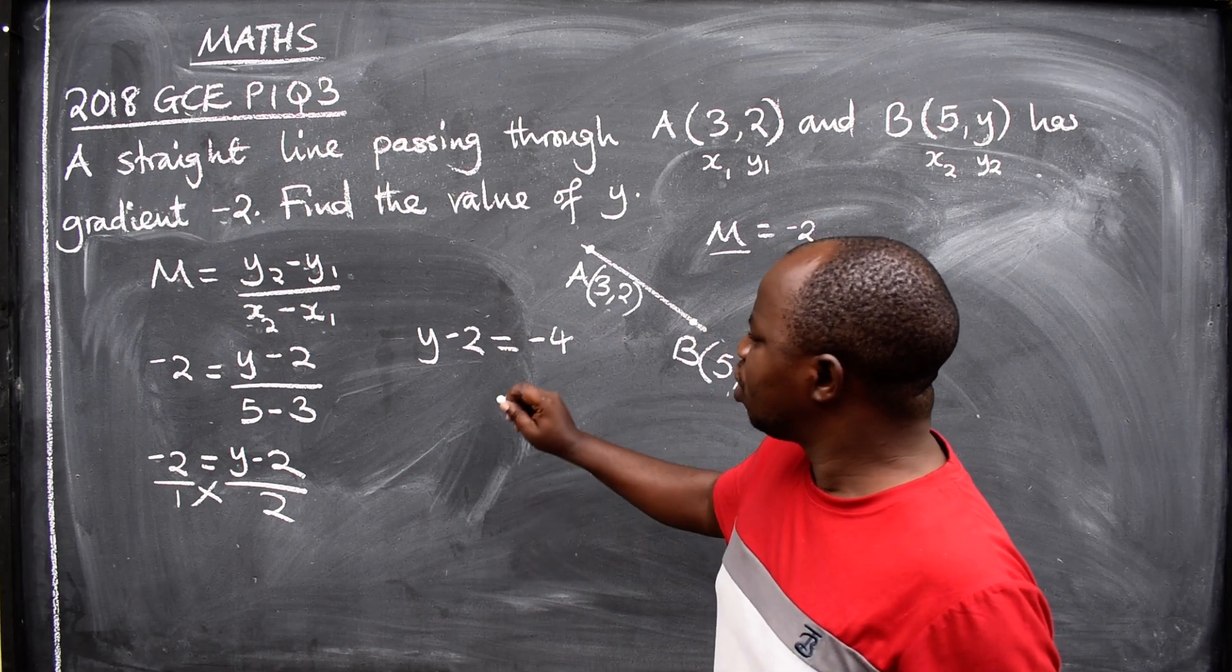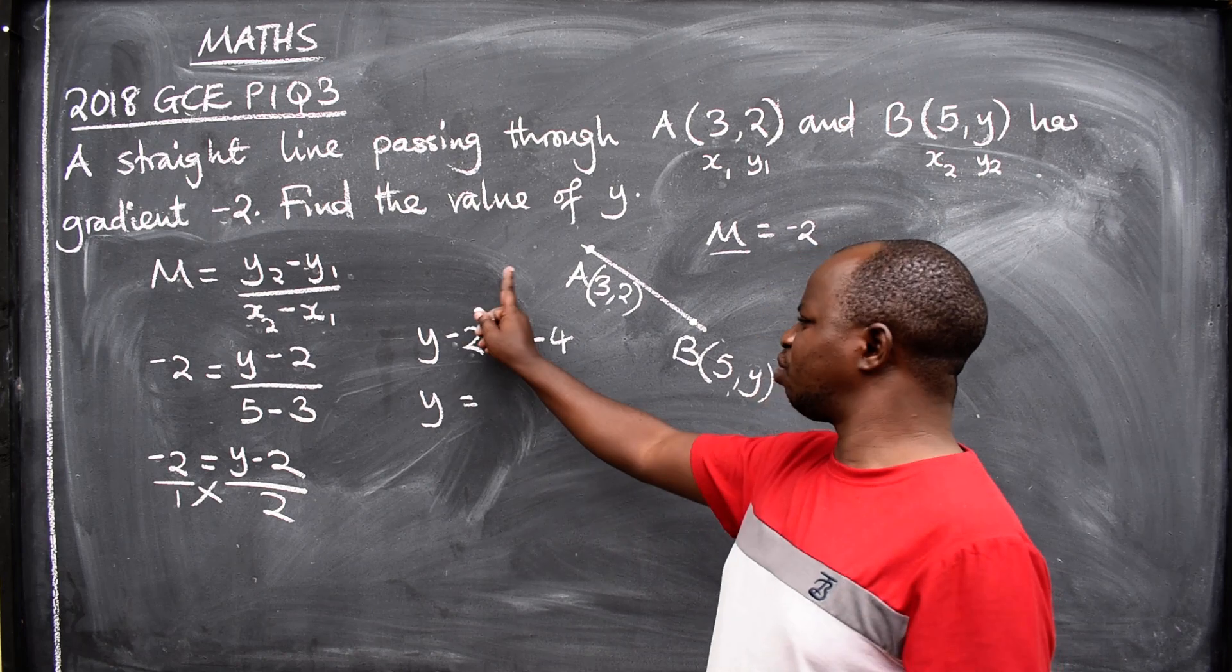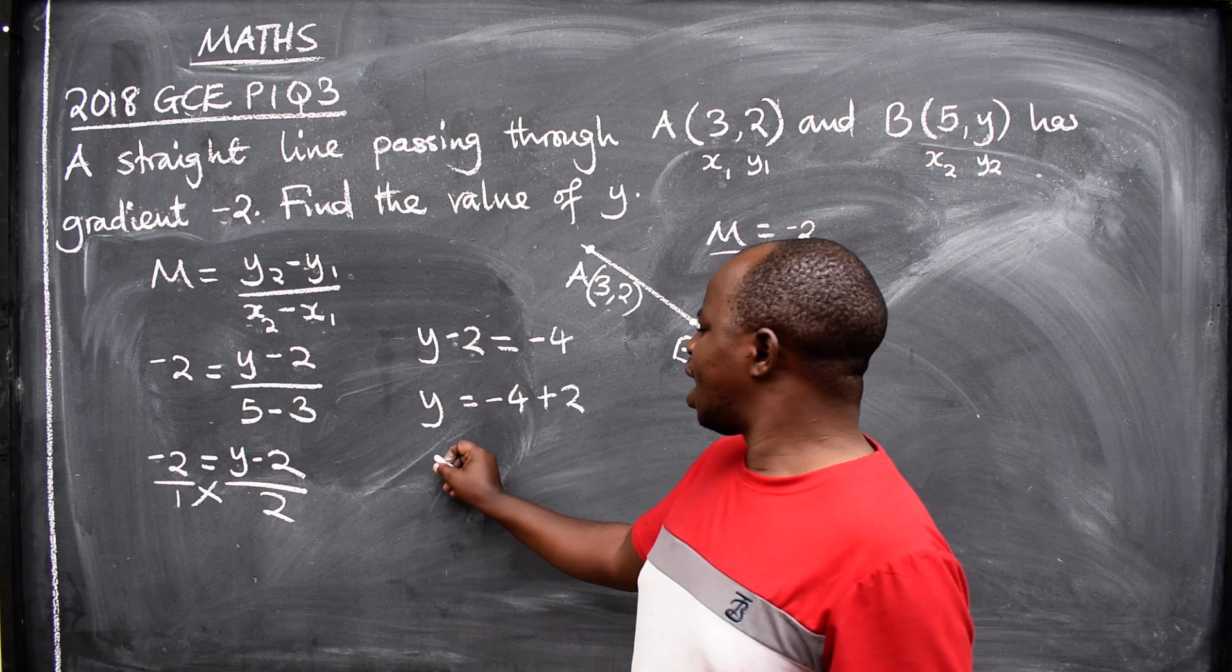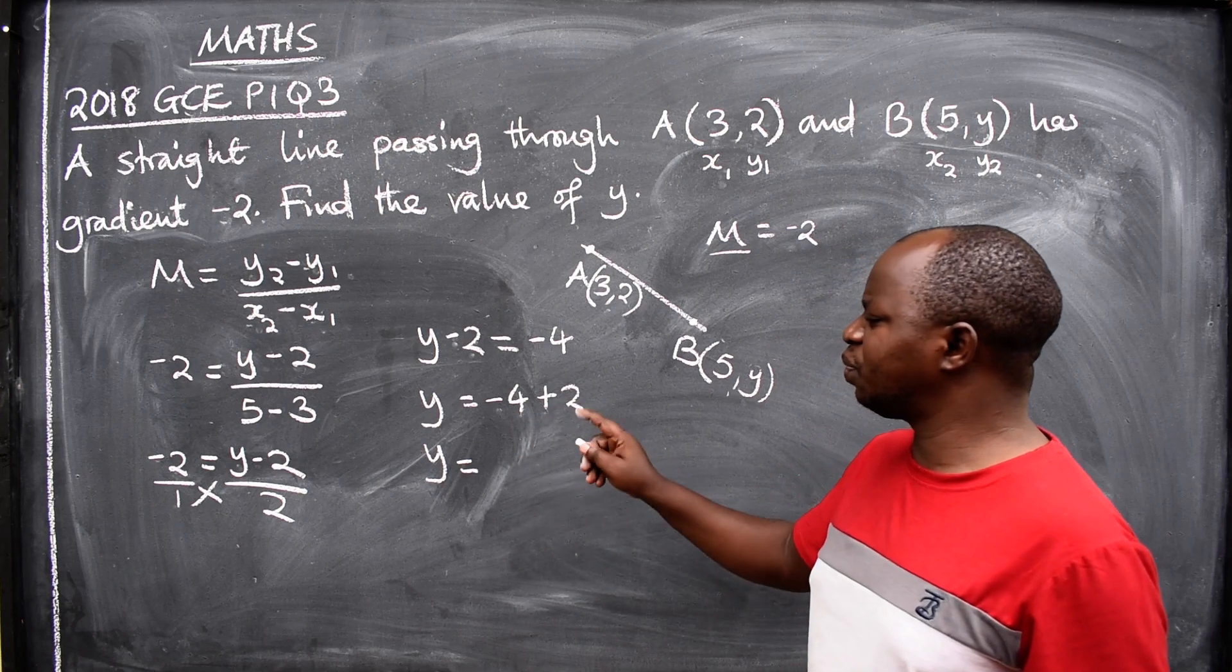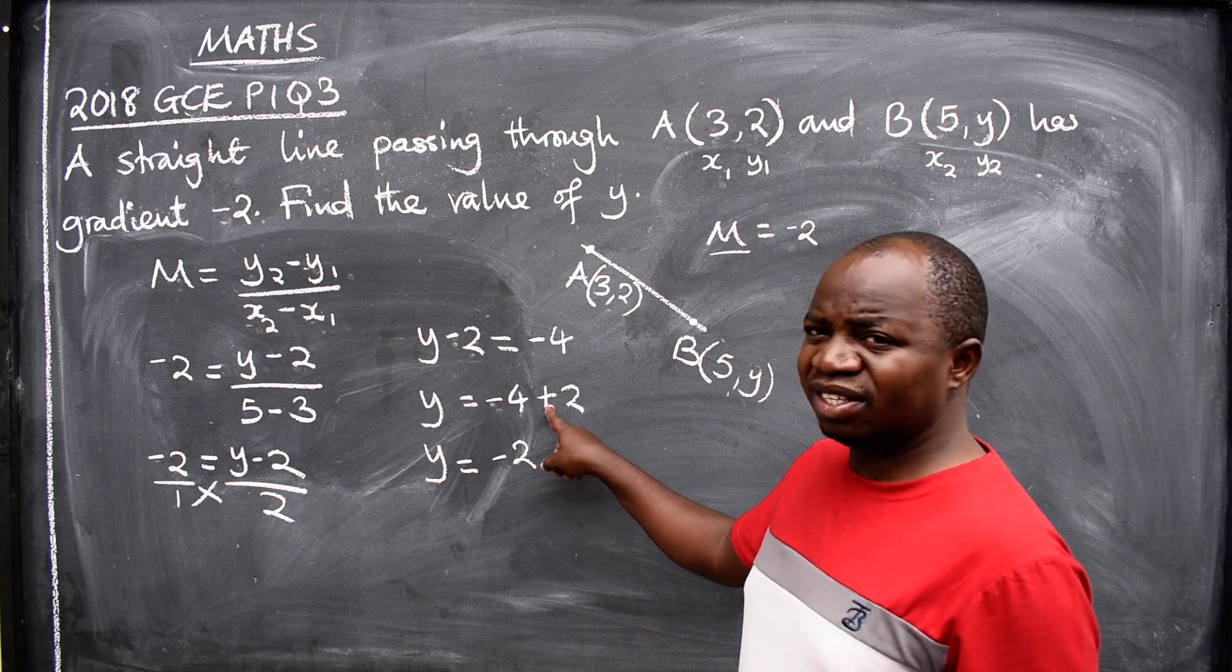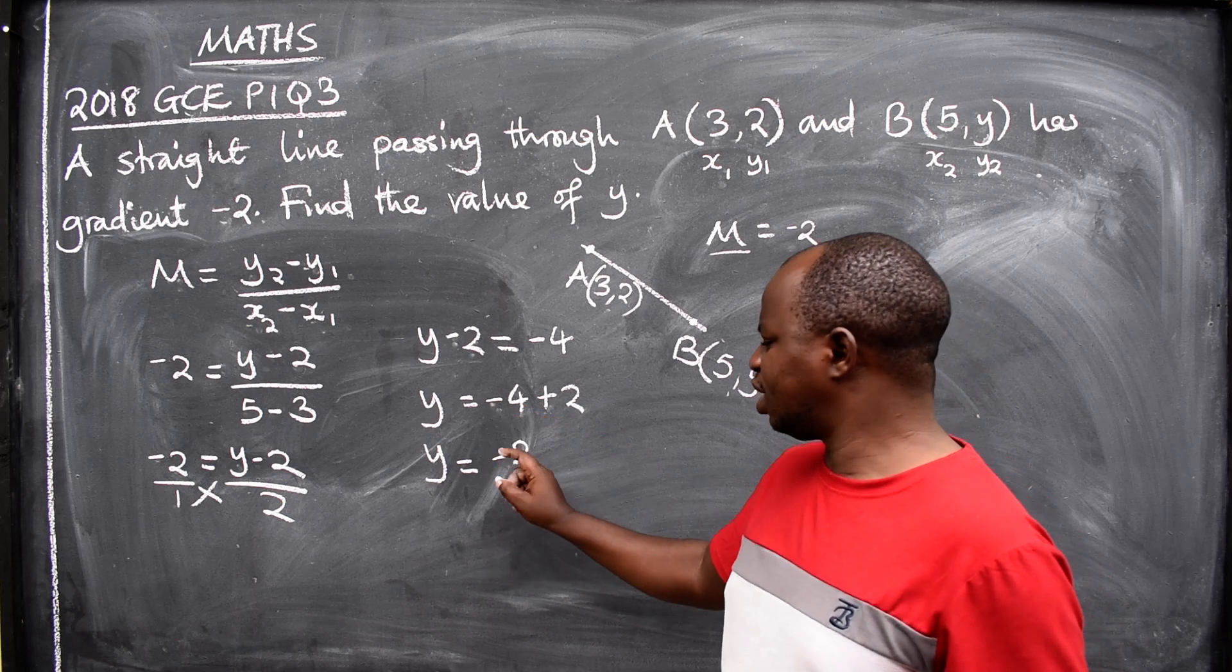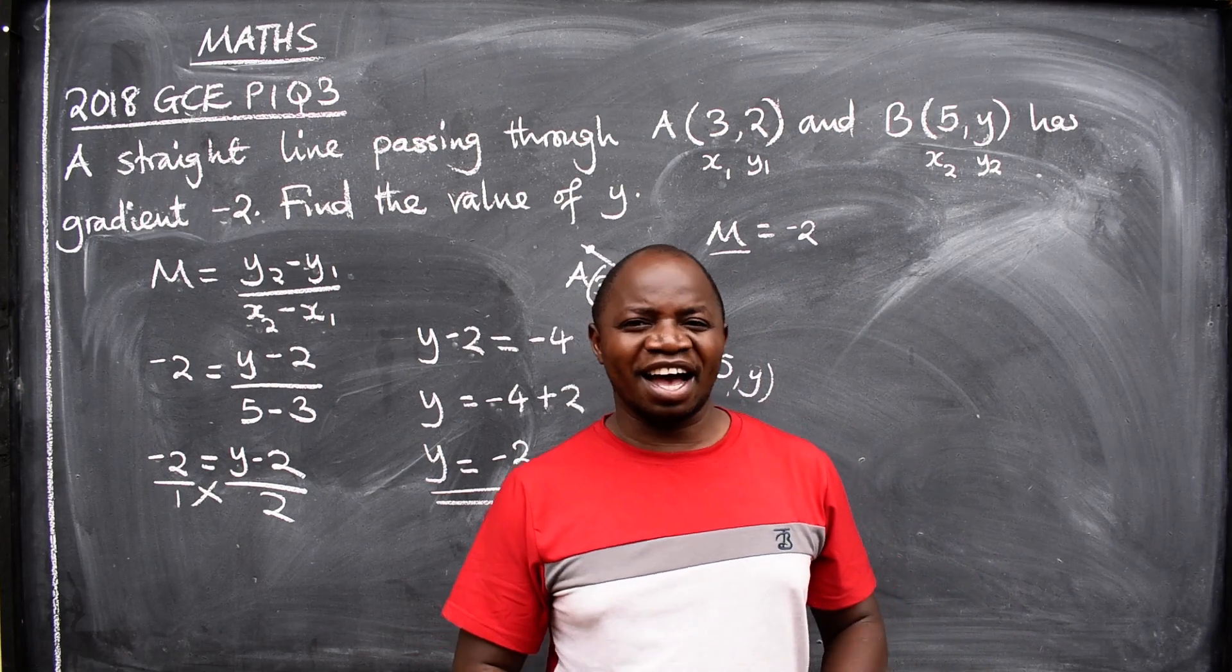So now the -2 has to cross the equal sign, so y = -4 + 2. Y will be equal to -4 + 2, which is -2. Different signs, so subtract: 4 take away 2 is 2. Get the sign from the bigger number, 4, which is negative. So the value of y is -2.